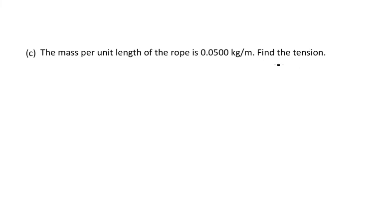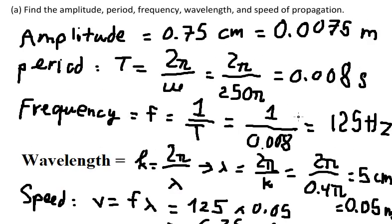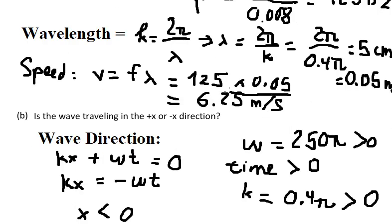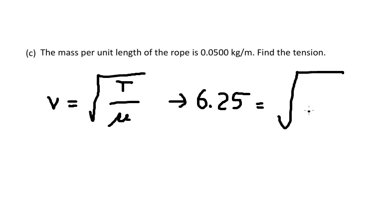Question C: we want to find the tension. The formula is V equals the square root of T over mu, where V is 6.25 meters per second and mu is the mass per unit length, which is given in the problem.